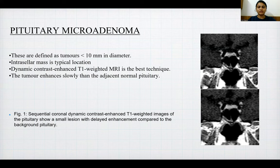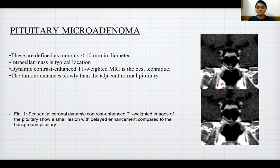Pituitary microadenoma: these are defined as tumors less than 10 mm in diameter. The typical location is intrasellar, and dynamic contrast-enhanced T1-weighted MRI is the best technique. The tumor enhances more slowly than the adjacent normal pituitary. Sequential coronal dynamic contrast-enhanced T1-weighted images show a small lesion with delayed enhancement compared to the background pituitary.